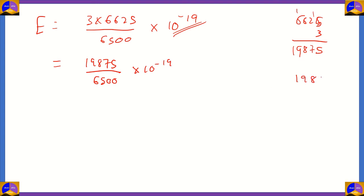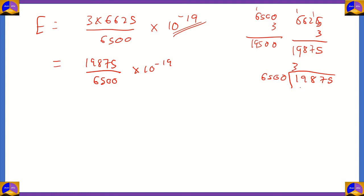Dividing 19875 by 6500: 6500 × 3 = 19500. So we put 3 in the quotient. 19875 − 19500 = 375. We can't divide 375 by 6500 directly, so we put a decimal point and add zeros. 375 × 100 = 37500, but 6500 doesn't go into 3750 once, so we place a zero and get 37500.